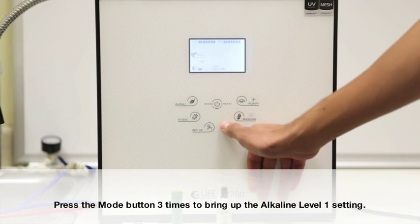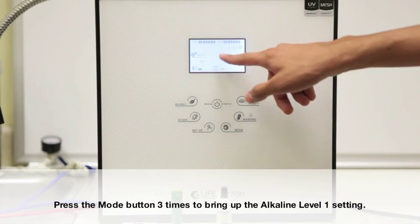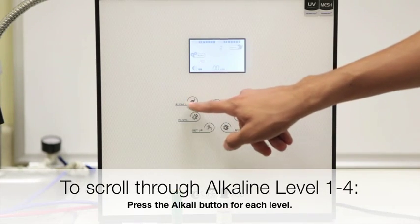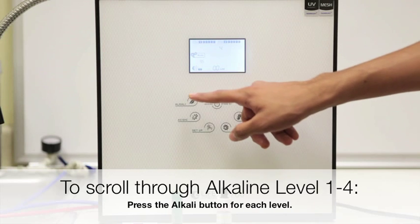Press the mode button three times. That'll bring up the alkaline 1 setting. You can scroll through alkaline level 1, 2, 3, and 4 by pressing the alkaline button.